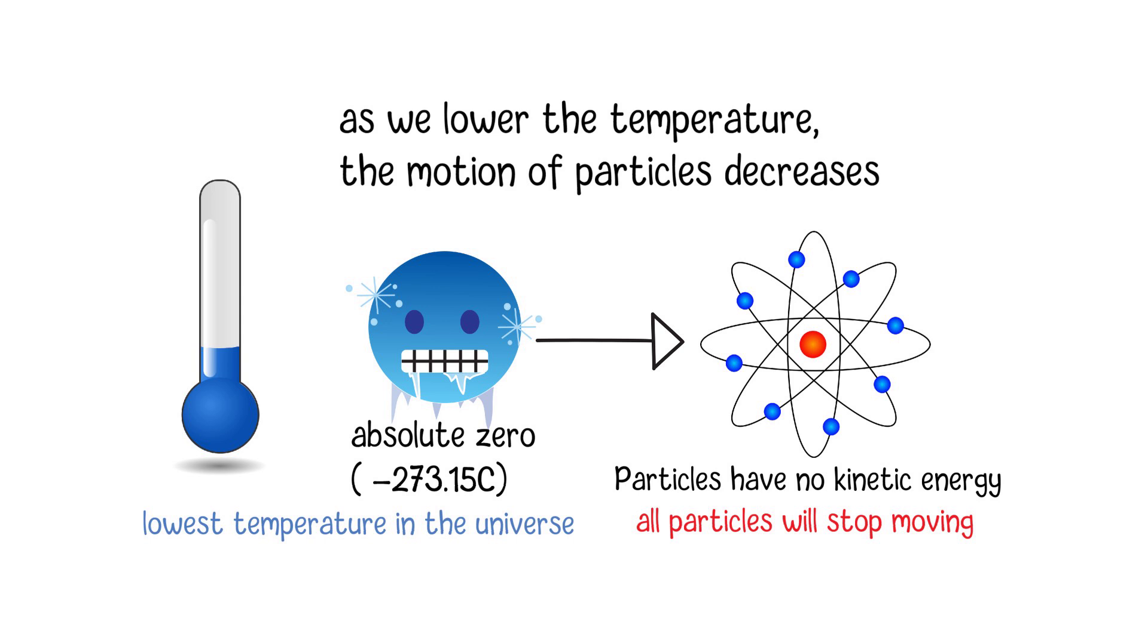Absolute zero is also known as the ground energy state for particles. According to the third law of thermodynamics, it is extremely difficult to reach absolute zero because removing all thermal energy from a system is a highly challenging task.